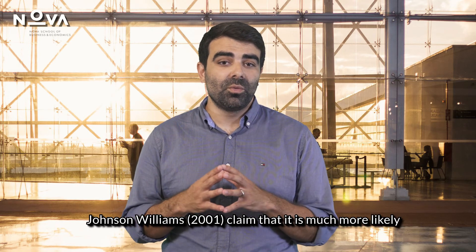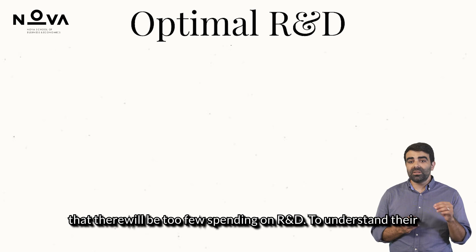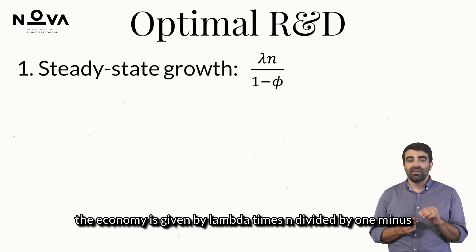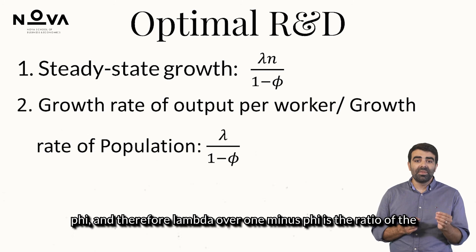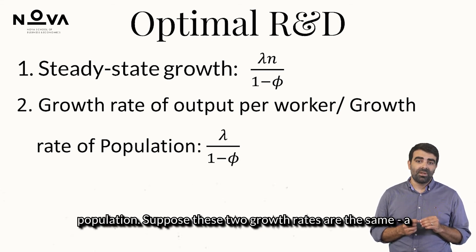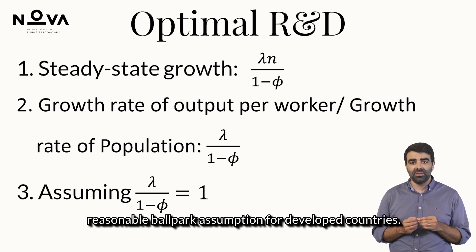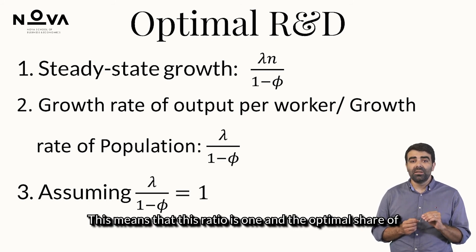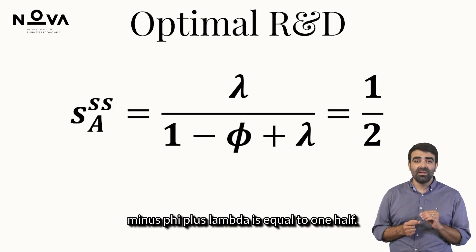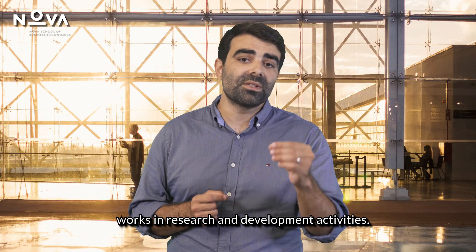Jones and Williams, in 2001, claimed that it is much more likely that there will be too little spending on R&D. To understand their reasoning, remember that the steady-state growth rate of the economy is given by lambda times N divided by 1 minus phi, and therefore lambda over 1 minus phi is the ratio of the growth rate of output per worker to the growth rate of the population. Suppose these two growth rates are the same — a reasonable ballpark assumption for developed countries. This means that this ratio is 1, and the optimal share of researchers equals lambda over 1 minus phi plus lambda, which equals one half. There is no country in the world where 50% of the population works in research and development activities.